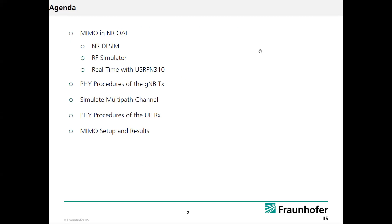So our agenda for today: first of all, we are going to start with how we can run and test the MIMO feature in the new radio OpenAirInterface. We will start with the DeFi simulator, then the RF simulator, then if you like to run it in real time. We will provide basically how you can build and run OpenAirInterface supporting the MIMO feature. Then we are going to have a look into the DeFi procedure of the gNB transmitter supporting MIMO pre-coding. Then we will discuss our simple modification in the simulated multipath channel to support an arbitrary number of transmit and receive antennas.